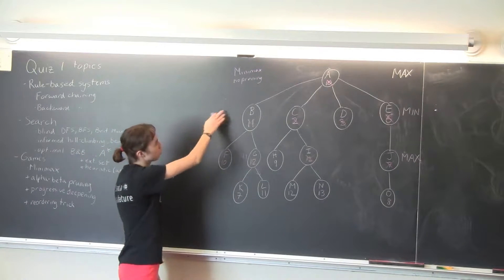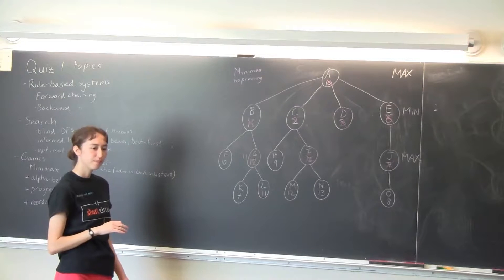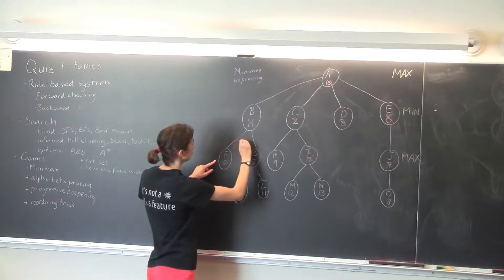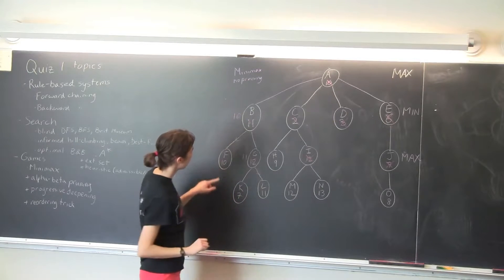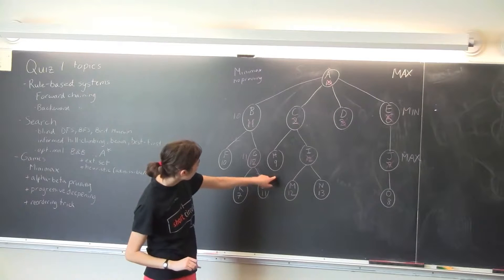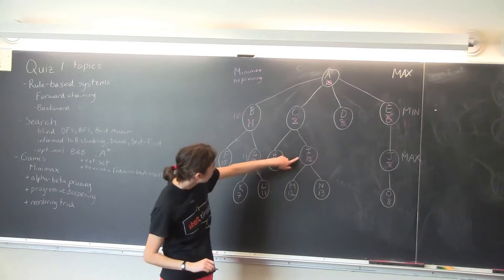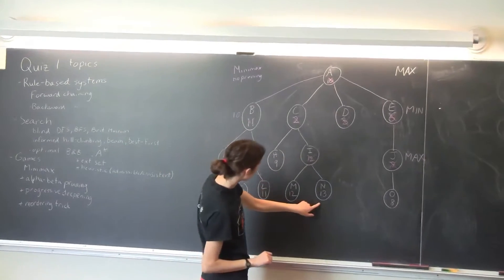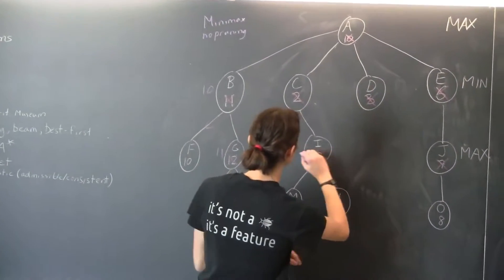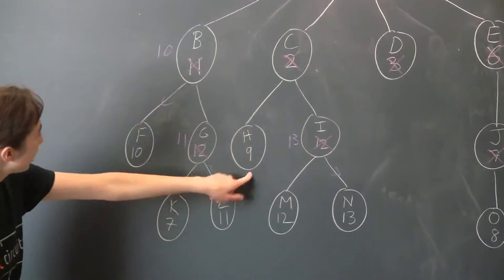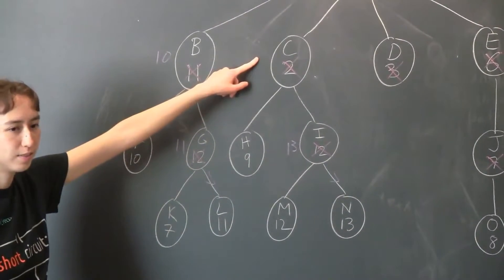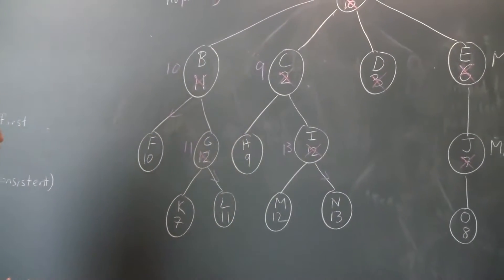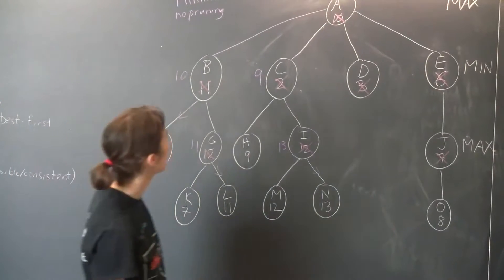And so now we know what score would min get at B? 10? Yeah, because min wants the smaller values. So min would go that way and get 10. And then if we go over here and start at the bottom, what would max get at node I? 13. And then this is just a 9. So what would min get at C? 9, so this is pretty easy. We're just taking min and max, and you just have to keep track of whose turn it is, whether it's min's turn or max's turn.